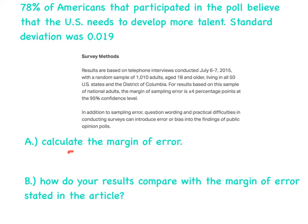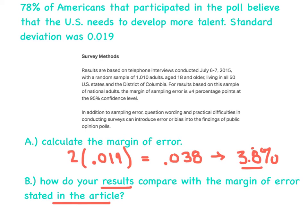Let's see if we can calculate the margin of error using our method of just doubling the standard deviation. If we double the 0.019, we get 0.038, which would be 3.8%. How do our results of 3.8% compare with the margin of error stated in the article? We're basically saying 3.8 versus the plus or minus 4% they listed, and it's very close. They've probably got a lot more detail going into theirs, but for our simplicity and our model of just doubling the standard deviation, it's very close.